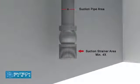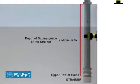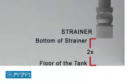The suction strainer must be at least 4 times the suction pipe area, and the mesh size should screen out solid particles that could clog the impeller. The minimum depth of submergence of the strainer should be at least 3 times the pipe diameter, measured from the upper row of holes of the strainer. The distance between the bottom of strainer and floor of the tank should be 2 times the pipe diameter.